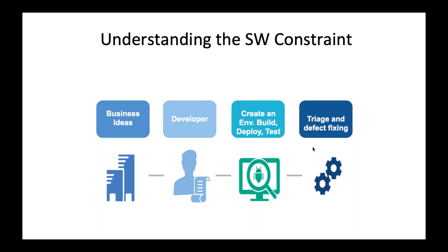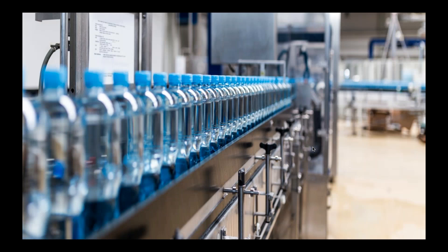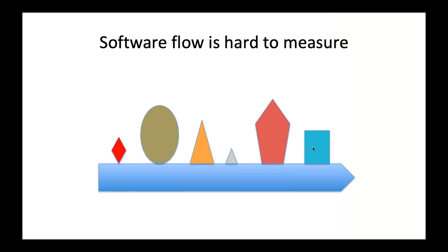Understanding the constraint in software is important. What's also unique and challenging is that in manufacturing, we're building the same thing over and over again — it's easy to measure how many units come down the line per hour, per day. You can run experiments to improve efficiencies and use a scientific method to figure out whether it got better or not. The challenge with software is that flow is really hard to measure. Each feature and process is a different size and different shape. When I make a change, I don't know if I'm processing something bigger or smaller, so it's very hard to measure the flow.